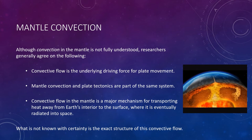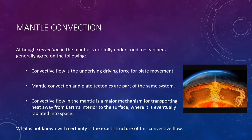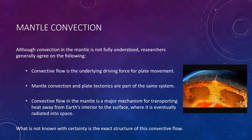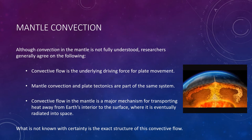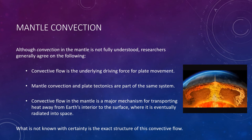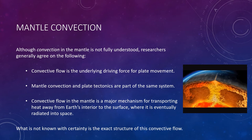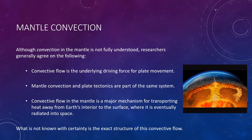Although convection in the mantle is not yet fully understood, researchers generally agree on the following: convective flow, in which warm buoyant mantle rock rises while cool dense lithospheric plates sink, is the underlying driving force for plate motion. Mantle convection and plate tectonics are part of the same system — subducting oceanic plates drive the cold downward-moving portion of convective flow, while the shallow upwelling of hot rock along the oceanic ridge and buoyant mantle plumes are the upward-flowing arms. Convective flow in the mantle is also a major mechanism for transporting heat away from Earth's interior to the surface, where it is eventually radiated into space. What is not known with certainty is the exact structure of this convective flow; several models have been proposed, and we'll look at two of them.